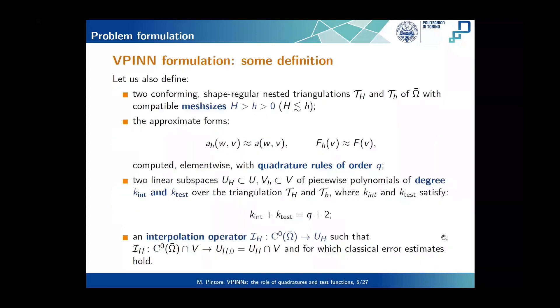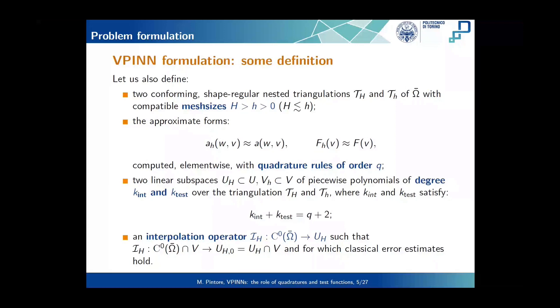Before talking about our error estimate, I need to introduce some more ingredients. First, we need two conforming shape-regular and nested triangulations, T_H and T_h. They have to be compatible in the sense that the mesh sizes are compatible. Then we need the two approximate forms A_H and F_H that respectively approximate A and F. They must be computable element-wise with quadrature rules of order Q. Then we need the two linear subspaces U_H and V_H, made of piecewise polynomials of order k_int and k_test, defined over the two triangulations.